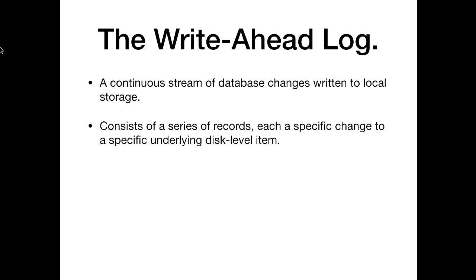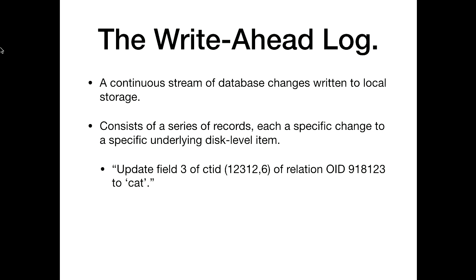It's a continuous stream of database changes written to local storage, consisting of a series of records — in Postgres's case, each a specific change to a specific underlying disk-level item. If you've never done this, log into your Postgres database and say 'SELECT ctid FROM some_table' and you'll get a list of pairs of numbers, even though you didn't know you had a column called ctid. That's basically the disk address of that particular row — which Postgres disk page it's on and which offset into the disk page.